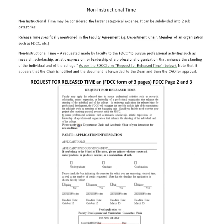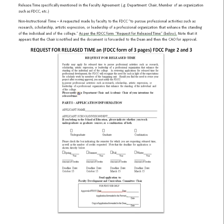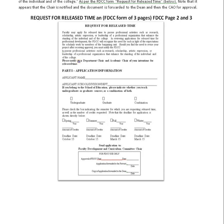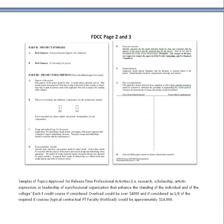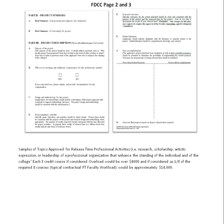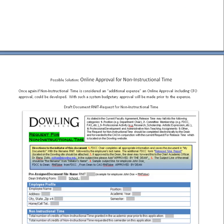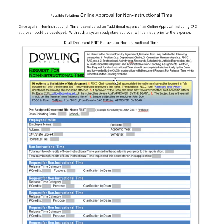Non-instructional time is basically release time as specified in the contract for things like FDCC or department chair, and faculty can also request release time for other items in the contract. The way it works is that the faculty requests from the FDCC using a three-page form. The topic for release time for professional activities could be research, scholarship, artistic expression, etc. This typically goes from the FDCC through the dean to the CAO. If it's an additional expense, we may consider a form for non-instructional time as well.